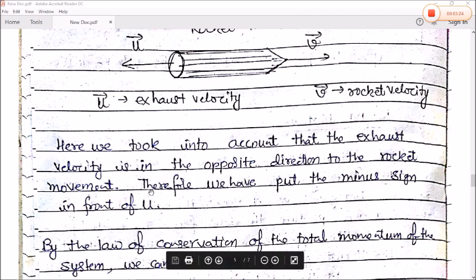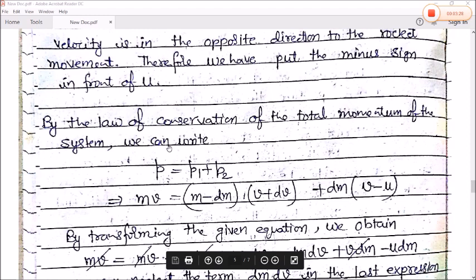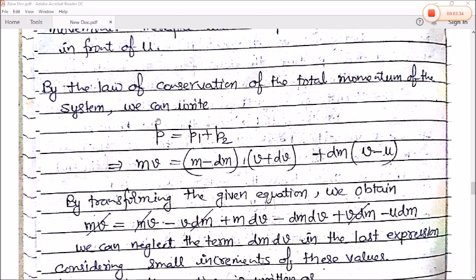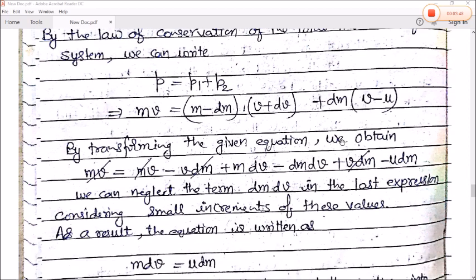Now from the law of conservation of momentum of the system, we can write P equals P1 plus P2. Multiplying the RHS terms, MV and MV cancel out, V*dm terms cancel, and since dm and dv are small, we can neglect the term dm*dv in the last expression.